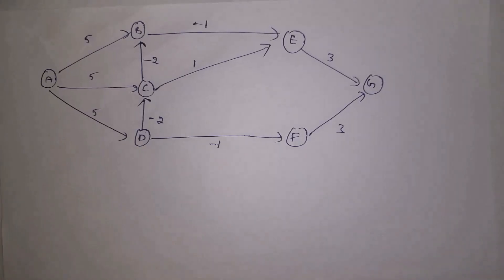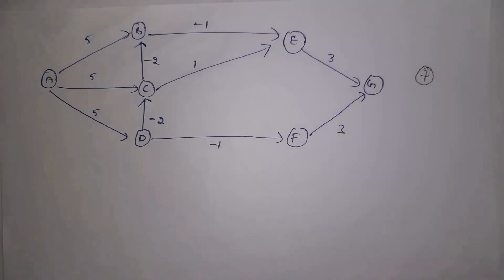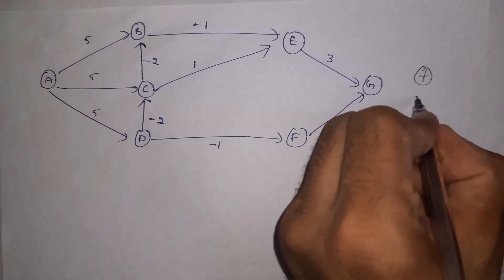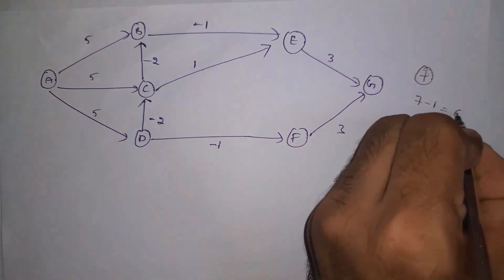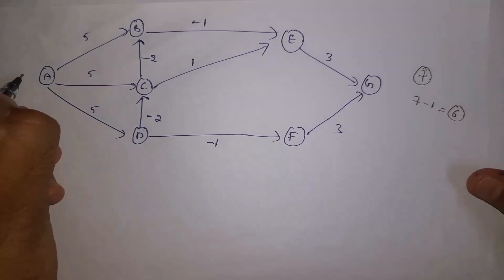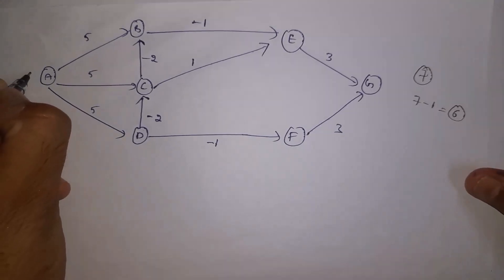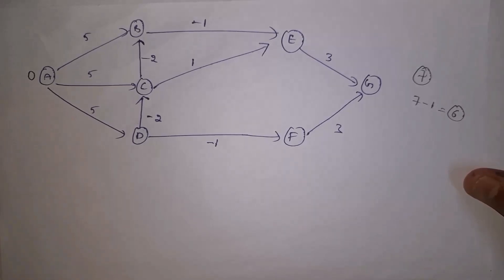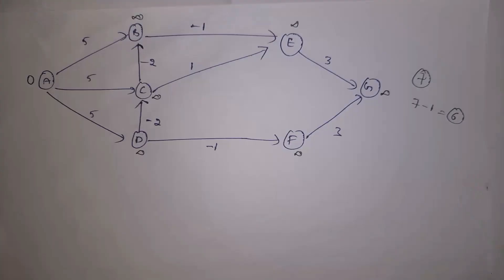Now I will explain Bellman-Ford algorithm with an example. This example has various routers: A, B, C, D, E, F, G — total seven routers. We need to apply the shortest distance n minus 1 times, that is 7 minus 1 equals 6 times. Initially we will mark zero for the source node, and for all other nodes we mark infinity. Infinity means unvisited; whenever we visit a node we replace infinity with that distance.